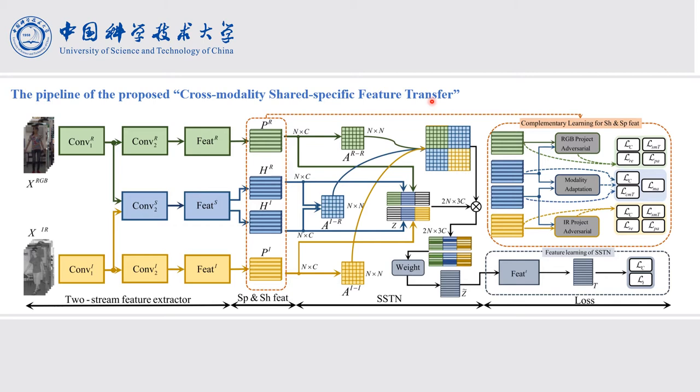The SSTN can utilize the modality-specific features for person re-identification. It is the first method to utilize the modality-specific features in the testing stage, and the complementary learning can help us to extract the post-shared feature and complementary-specific features.